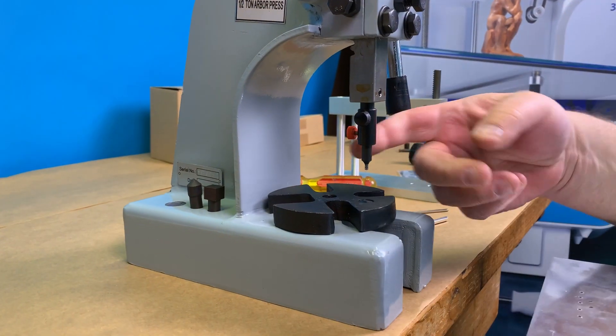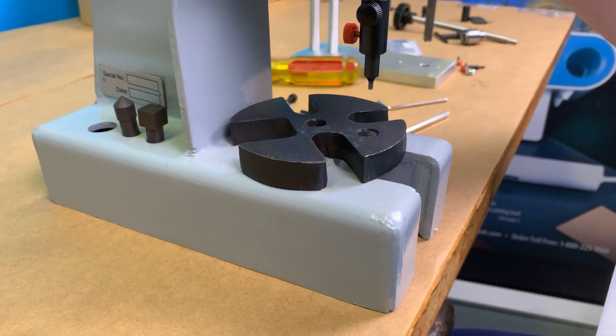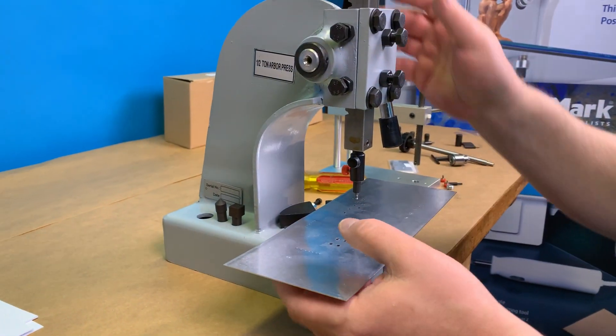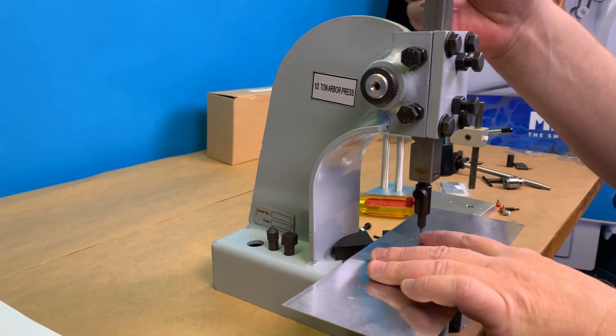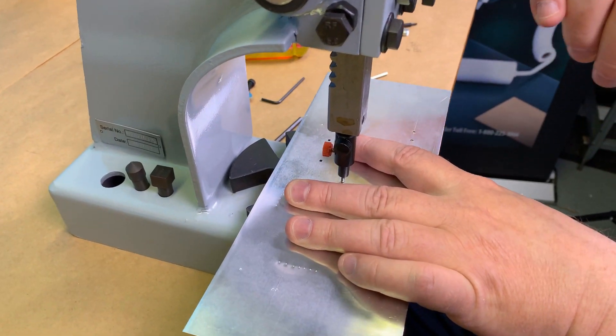I've got my punch and my die all set up. My table's locked. I've adjusted my handle so I'm in a good working place. I'm going to show you how to punch out. This is tin and it's probably about 1/32nds thick.